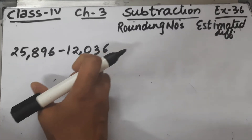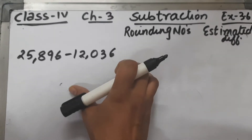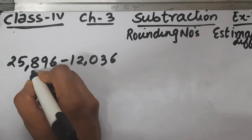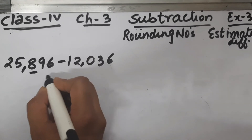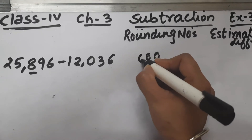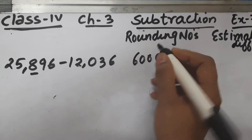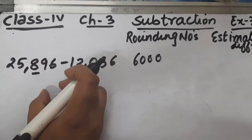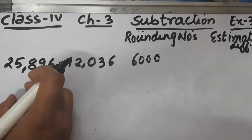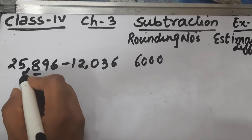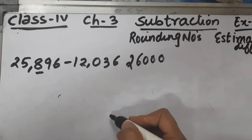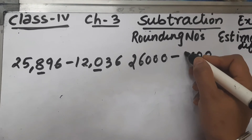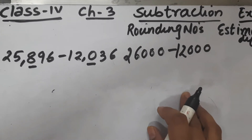Part B is 25,896 minus 12,036. First of all we will round off to the nearest thousand. For the first number, the hundreds place is 8, so ones, tens, and hundreds place will become zero and the thousands place will be increased by one. Here it is 5, so it will become 6, making it 26,000. For 12,036, the hundreds place is zero, so ones, tens, and hundreds will become zero with no change at the thousands place, giving 12,000.